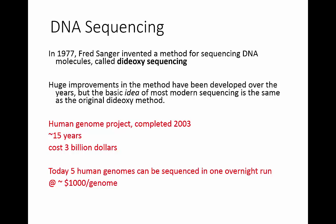DNA sequencing was used to figure out the sequence of the entire human genome, which was completed in 2003. It took about 15 years and cost about $3 billion. Sequencing technology has improved so much that today you can sequence an entire human genome in just one overnight experiment, and it costs about $1,000.